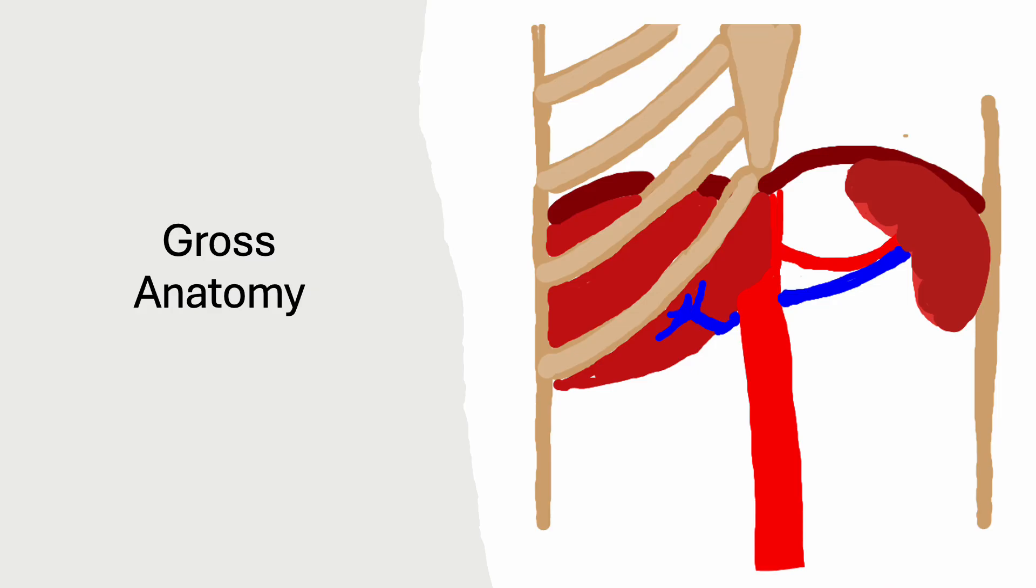The gross anatomy of the spleen is its location in the left upper quadrant. It is about the size of your fist, 3 inches by 5 inches basically. The blood supply comes from the aorta through the celiac trunk to the splenic artery. The venous return is by way of the splenic vein to the portal vein within the liver.